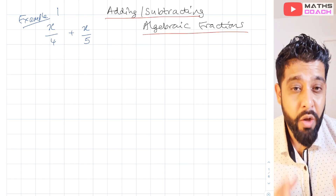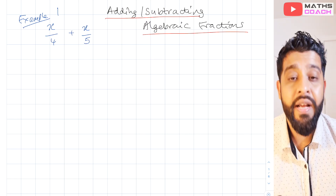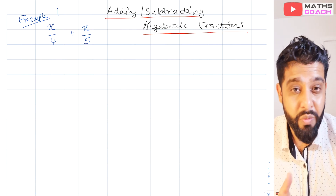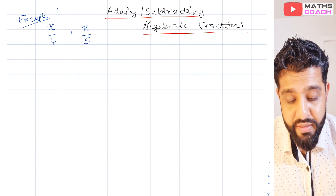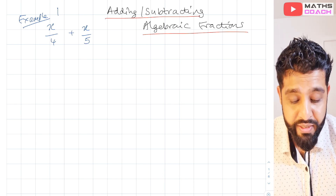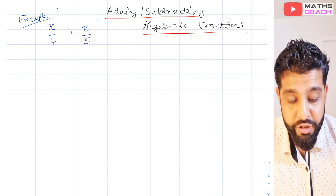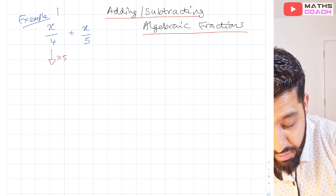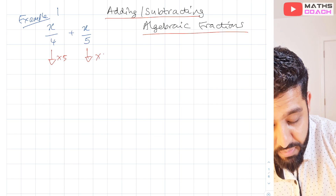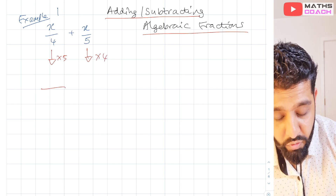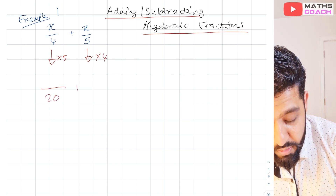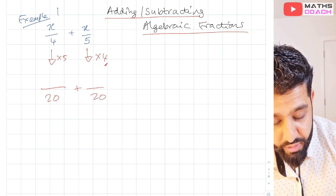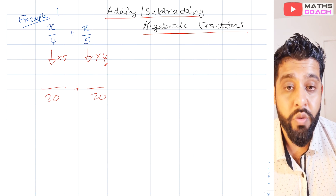You could look at the lowest common multiples of 4 and 5, but an easier way is to multiply one fraction by the other one's denominator. So here we multiply the first fraction by 5 and the second by 4, giving us 20 on the bottom for both — because 5 times 4 is 20 and 4 times 5 is 20.